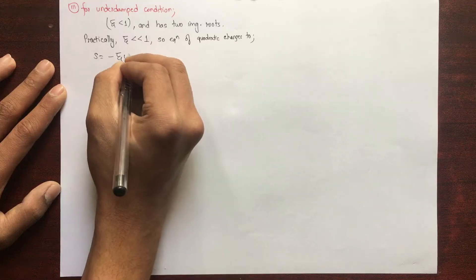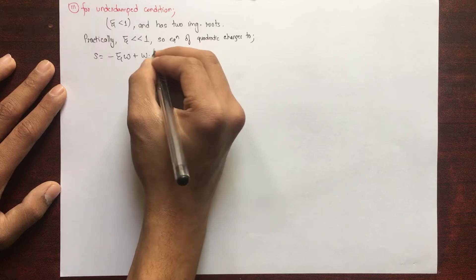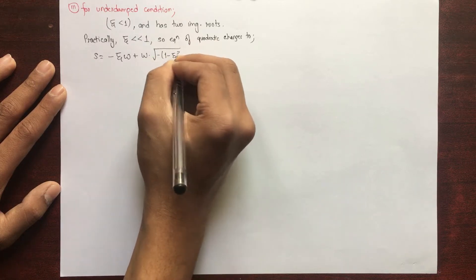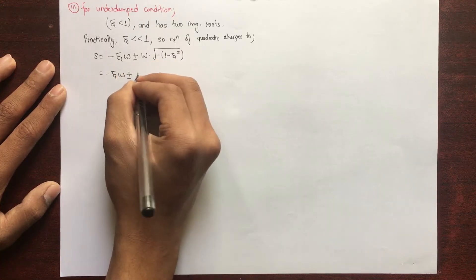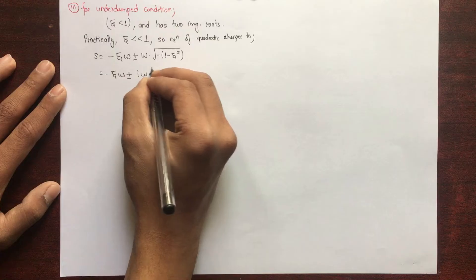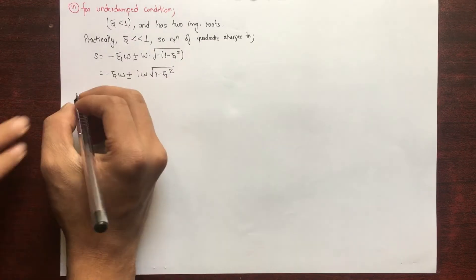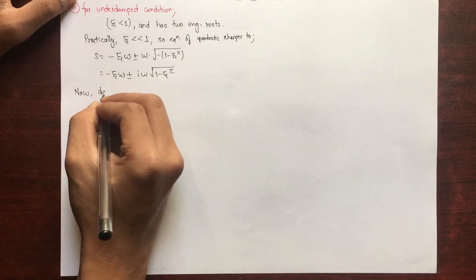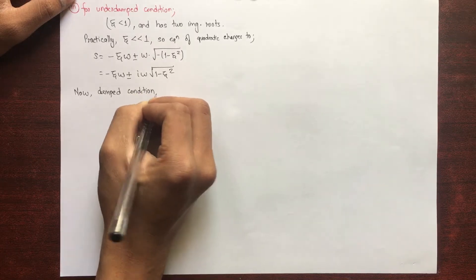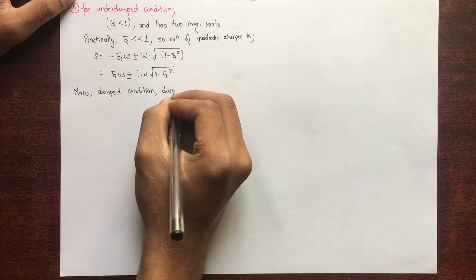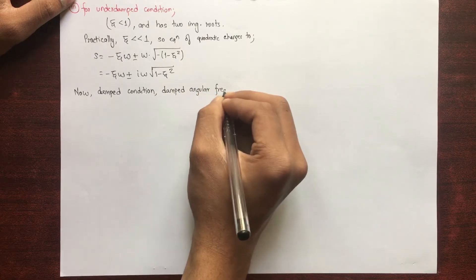s is equal to minus ξω plus ω, and taking minus as common: 1 minus ξ squared. So s equals minus ξω plus or minus i·ω·√(1 − ξ²), because we take i as common since i² equals minus 1. This leads us to a damped condition, meaning there will be a different frequency — the damped angular frequency, not the natural frequency.